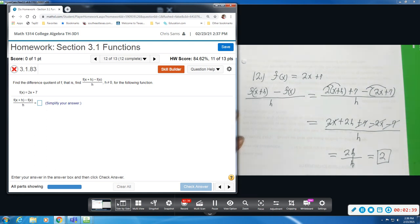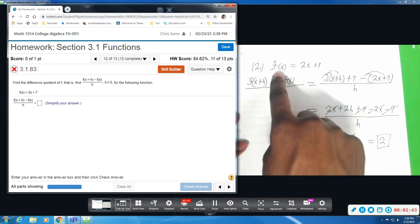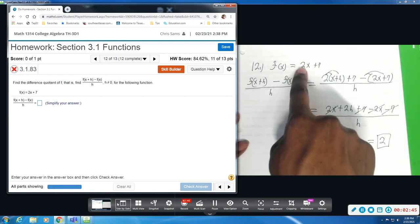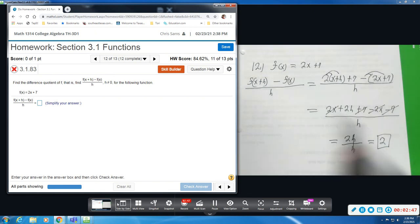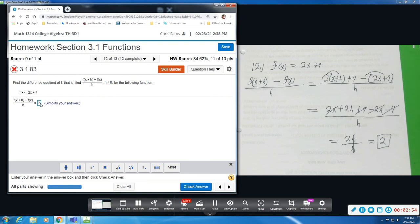This difference quotient is helping you to find the slope or the rate of change of a function. If you have a linear function, you can see the slope is 2. But any other function, this will help you to find the slope. So, we just did 2.